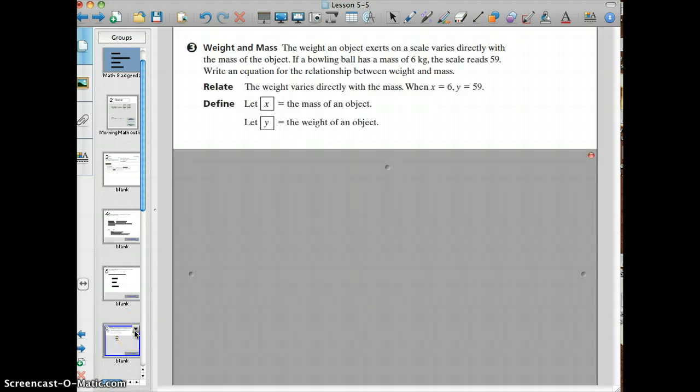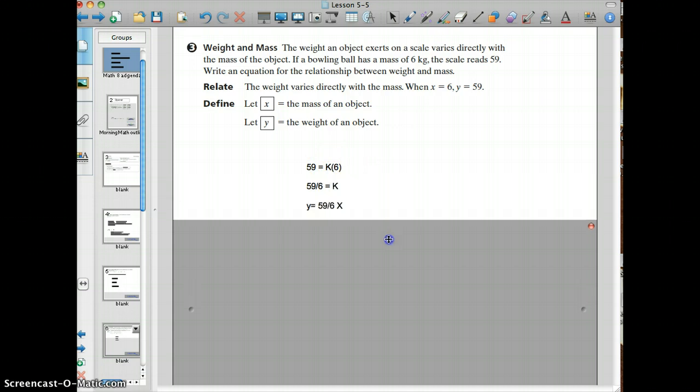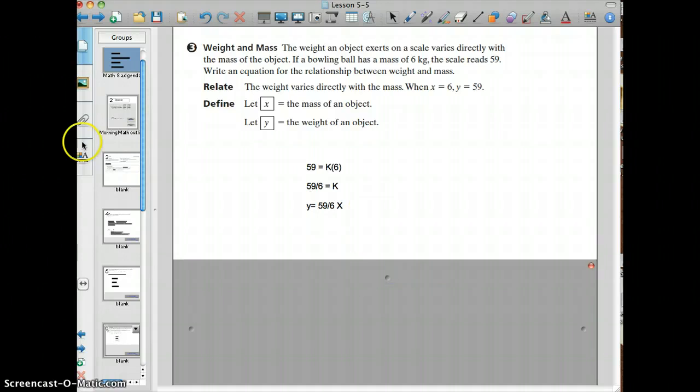Moving on to example 3. Here's a real world situation. The weight of an object exerts on a scale directly varies with the mass. If a bowling ball has a mass of 6 kilograms, and the scale reads 59, which is going to be its weight, you want to write an equation for the relationship between the weight and mass. So the weight varies directly with the mass. x is going to be 6, and y is going to be 59. Remember, x is the mass of an object, and y is the weight of an object. So we plug in 59 for y and 6 for the x, and we can solve for k of being 59/6. So now we have an equation on how the weight of an object and its mass vary directly, which is y equals 59/6 x.